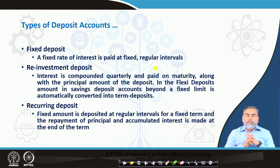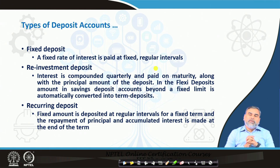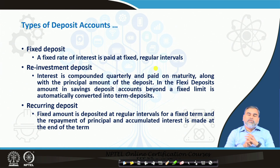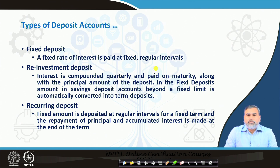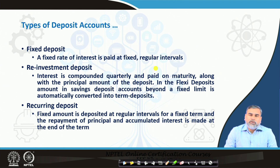Recurring deposits mean a fixed amount is deposited at regular intervals for a fixed term, and the repayment of principal and accumulated interest is made at the end of the term. For example, on a monthly basis you can pay a certain amount — say 1000 or 5000 — and the deposit can run up to 5 years. You cannot withdraw the money within that period, and once the 5 years are completed you get back the deposited money with accumulated interest.